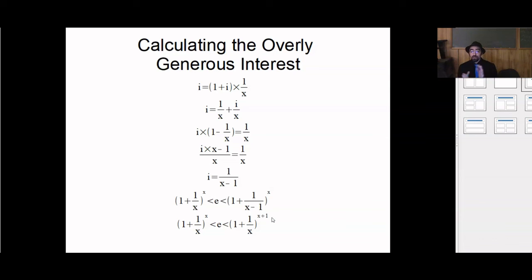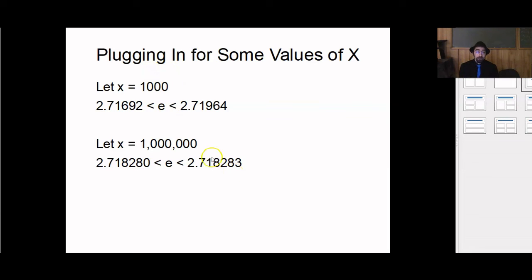This is called the squeeze principle. That if in my limit, the left bound and right bound are approaching each other, then I know my actual quantity has to equal that shared value. And so I can get over and under estimates for just values of x. I think here I plug in x = 1,000. For my lower bound, I get 2.71692. For my upper bound, I get 2.71964. For x = 1,000,000, I get 2.718280 to 2.718283. So we know it's a really tight bound for e.